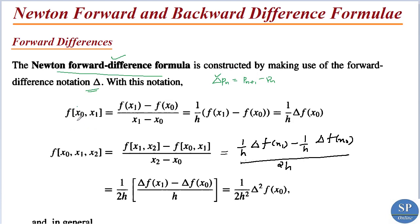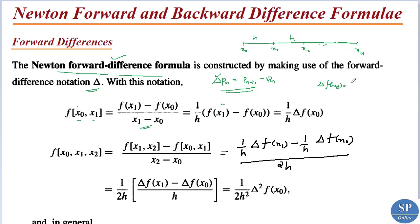The first divided difference involving x0 and x1, that is f[x0, x1], is f(x1) minus f(x0) divided by x1 minus x0. If the points are equally spaced, that is x0 plus h equals x1, x1 plus h equals x2, etc., then x1 minus x0 equals h. So this is 1/h times f(x1) minus f(x0). Using the delta notation, f(x1) minus f(x0) is delta f(x0), so the first divided difference equals 1/h times delta f(x0).